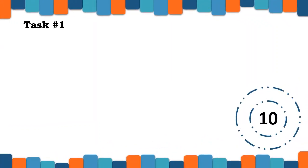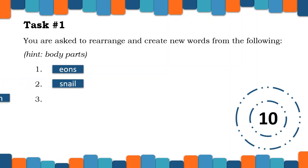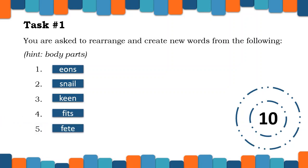Before we start, let us have task number 1. You are asked to rearrange and create new words from the following. Hint: body parts. 1. Eons. 2. Snail. 3. Kin. 4. Feets. 5. Feet. You have 10 seconds to think of different arrangements. Your timer starts now.